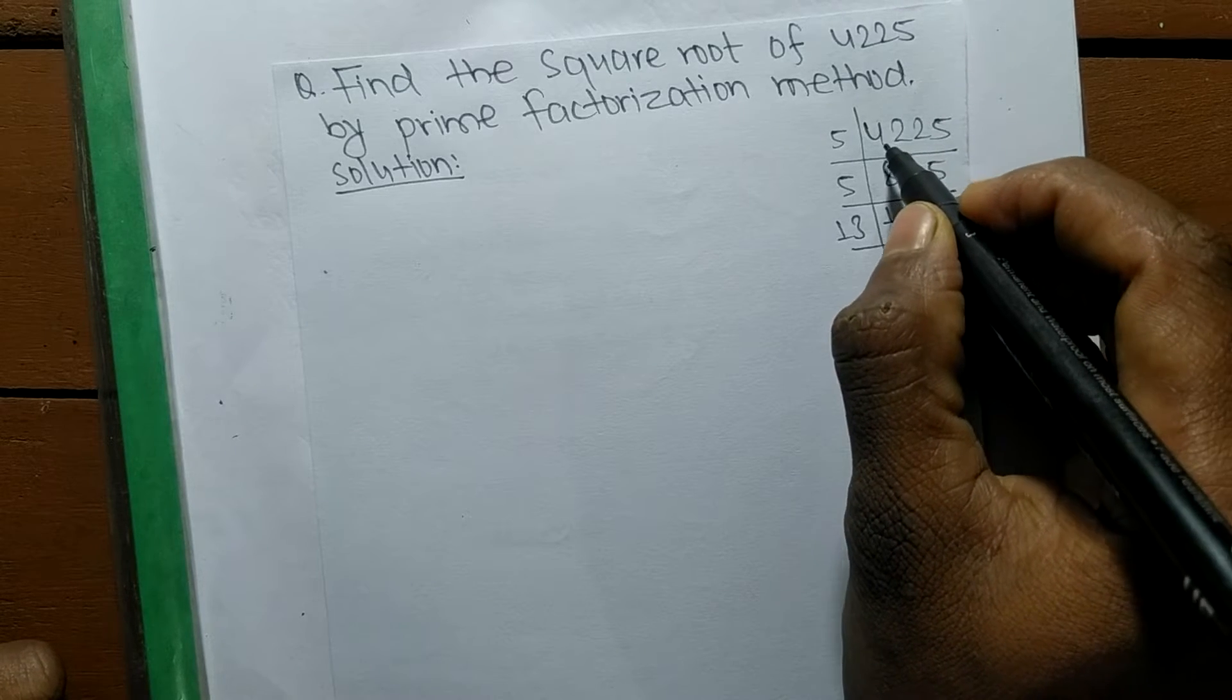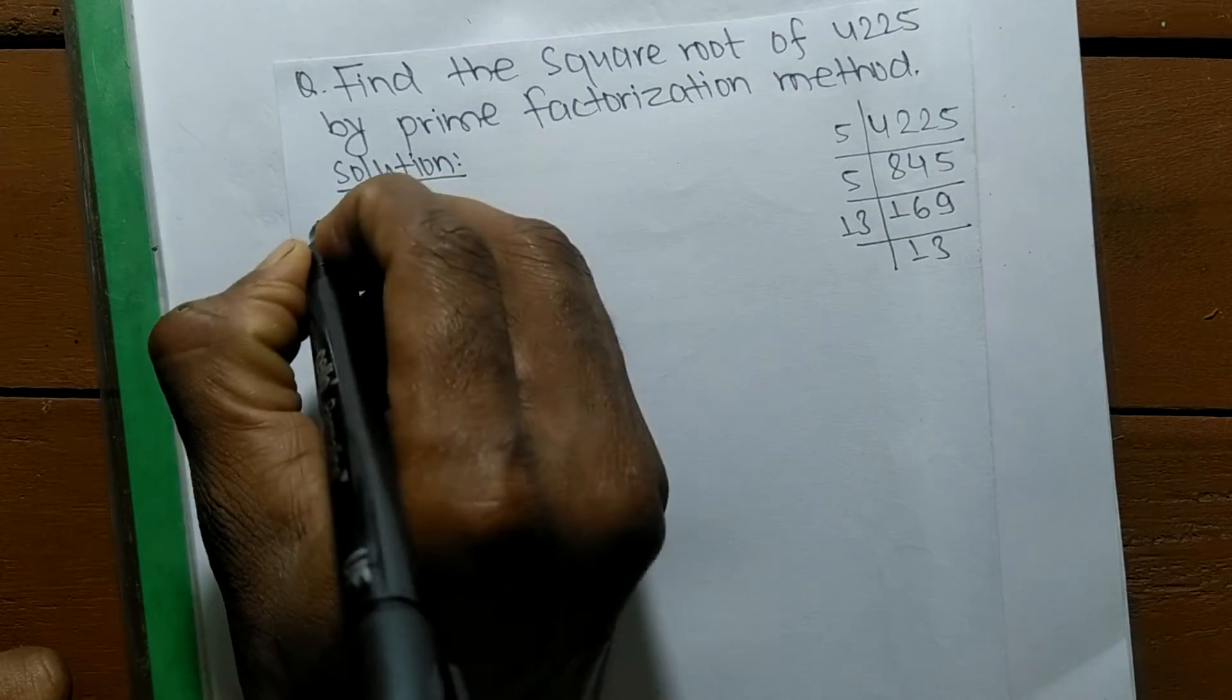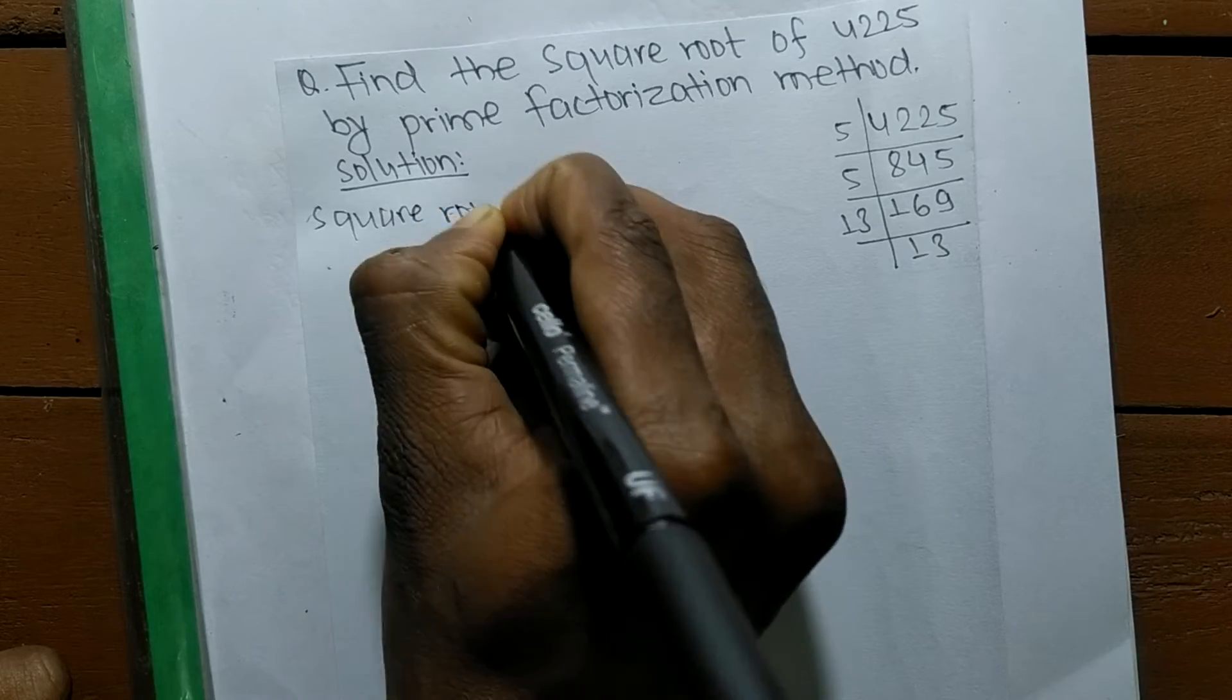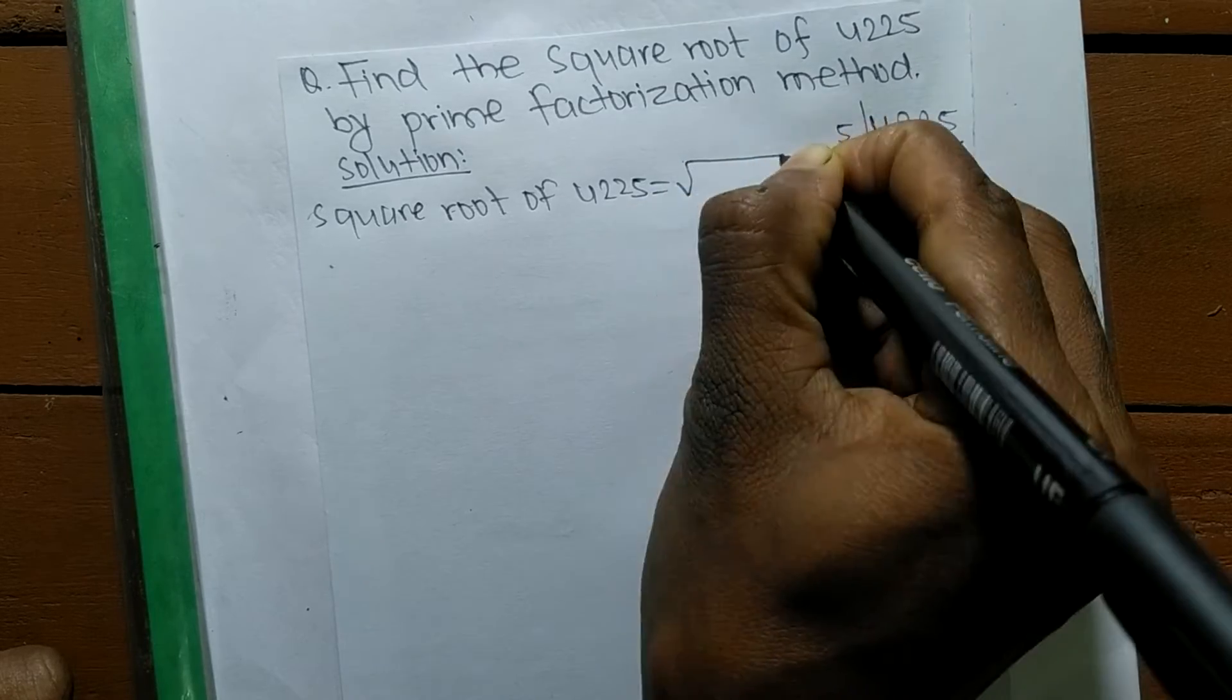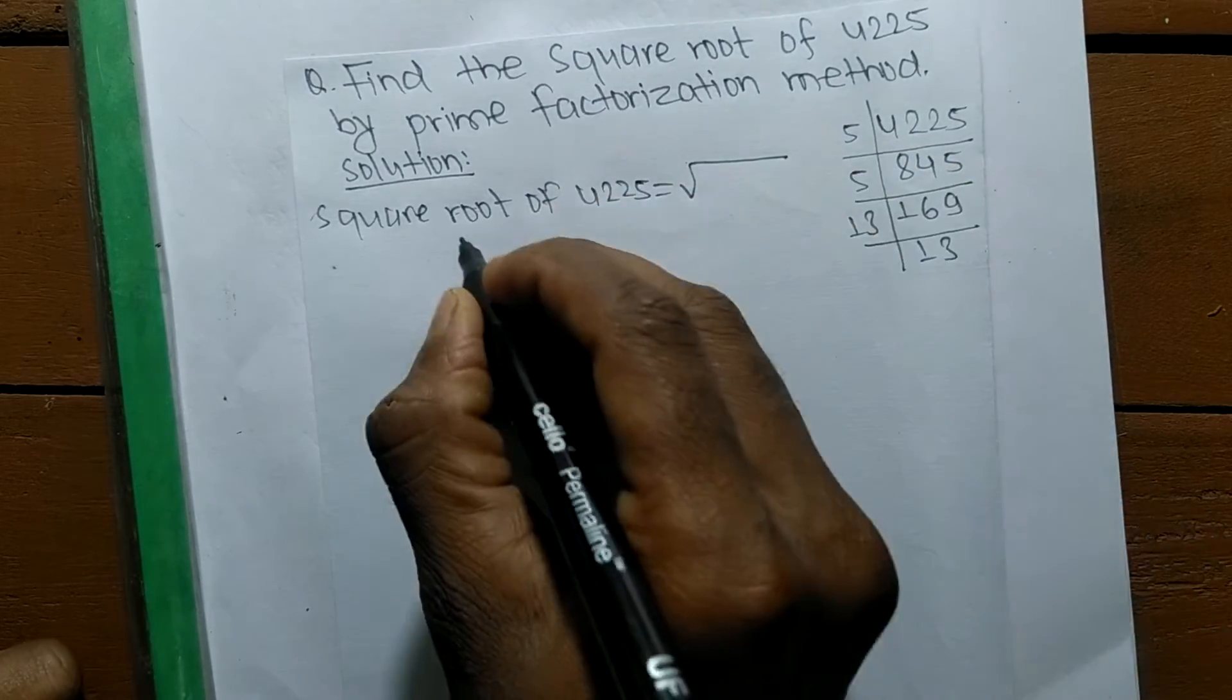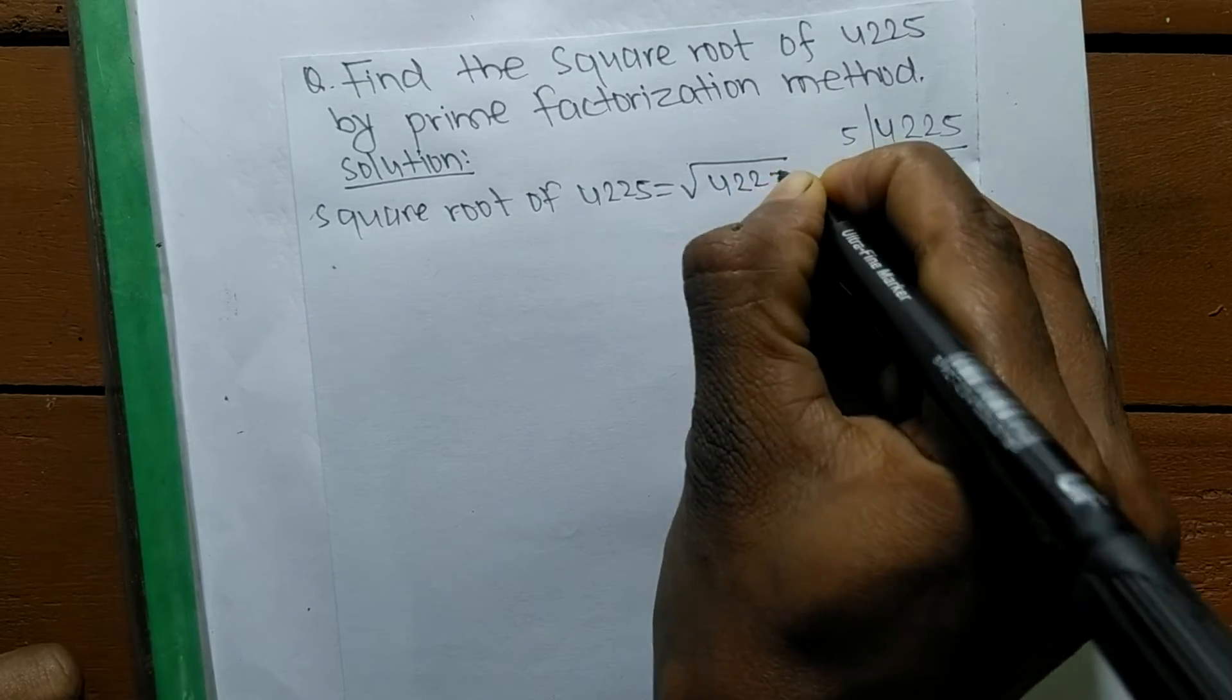We have taken out the prime factors of 4,225. So we are finding here a square root. Square root of 4,225 is equal to this is the sign of a square root.